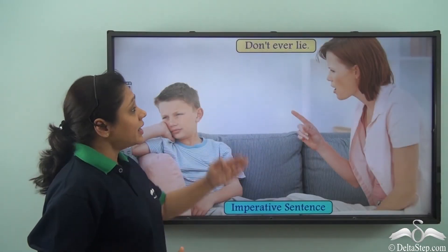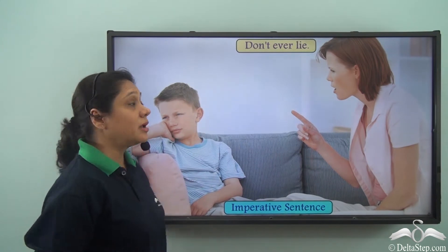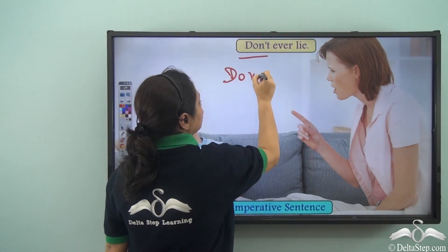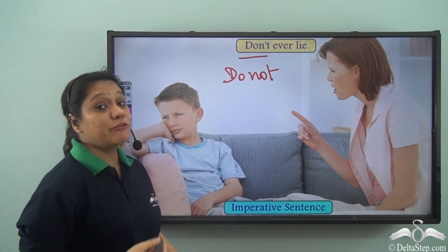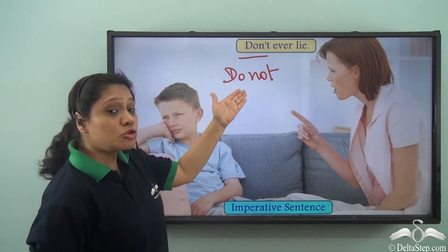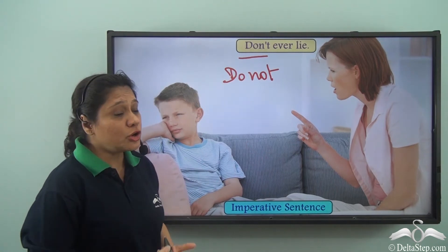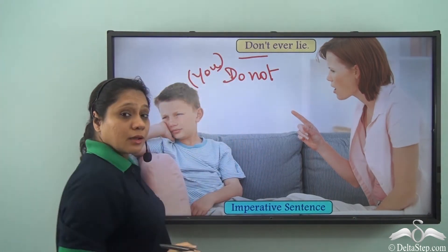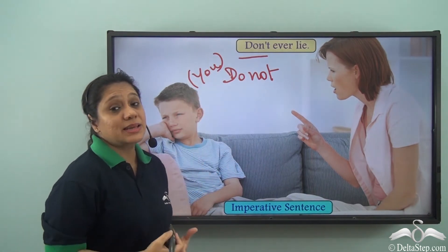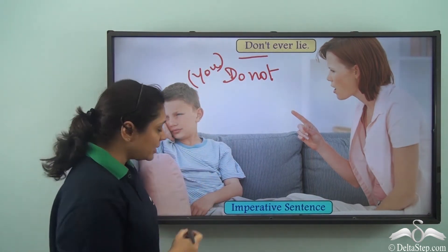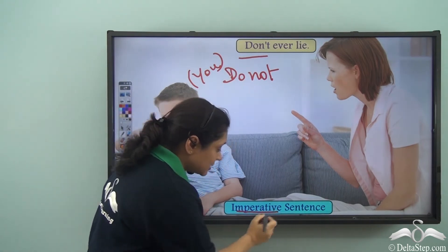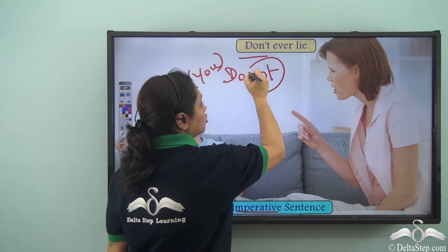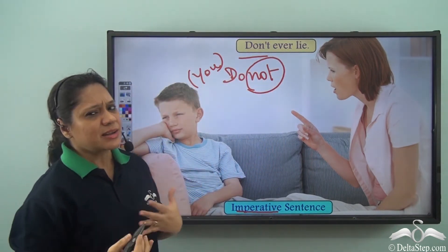Now when we say 'don't ever lie,' we actually want to say 'do not ever lie' — and we mean 'you do not ever lie.' So 'you' is implied here. This sentence is giving us a command, so this is also an imperative sentence. But in this imperative sentence we have used 'not,' so it has a negative sense.